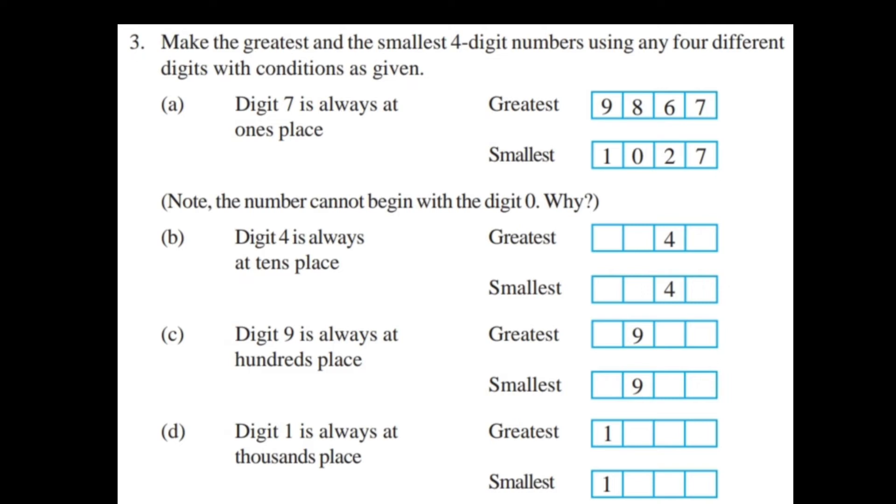Third: Make the greatest and the smallest four-digit numbers using any four different digits with conditions as given. First one: digit 7 is always at one's place. Greatest: 9867. Smallest: 1027. Next one: digit 4 is always at tens place. Greatest: 9847. Smallest: 1042. C: digit 9 is always at hundreds place. Greatest: 8976. Smallest: 1902. D: digit 1 is always at thousands place. Greatest: 1987. Smallest: 1023.